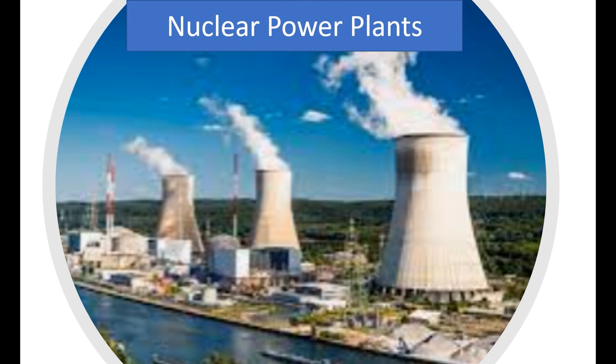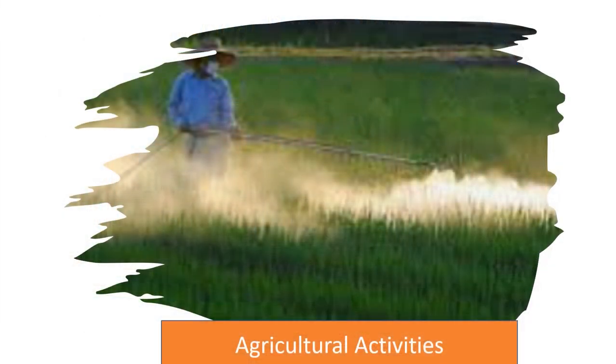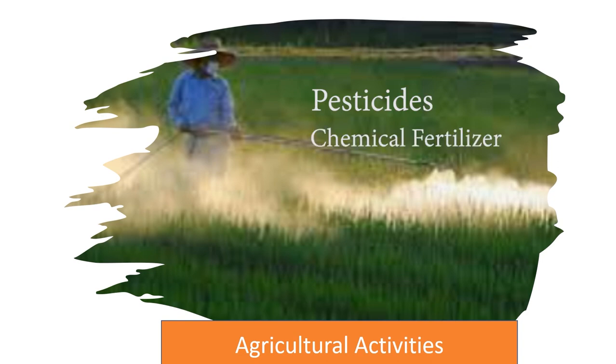Another source of air pollutants is nuclear power plants. Nuclear power plants release radioactive materials that are harmful to living things. Agricultural activities are also another source of air pollutants. The air pollutants released from these activities are pesticides and chemical fertilizers.